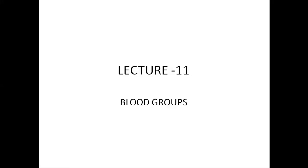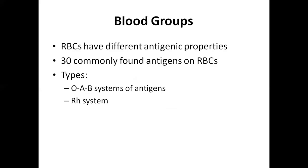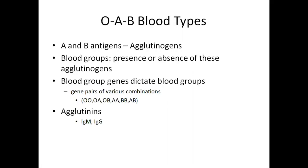Our topic of discussion today is blood groups. There are many types of blood group systems, but the most important are ABO and the Rh system. The ABO system depends upon the presence of antigens on the surface of RBCs. There are almost 30 different types of antigens present on RBCs, but the ABO blood group system depends upon two types of antigens.